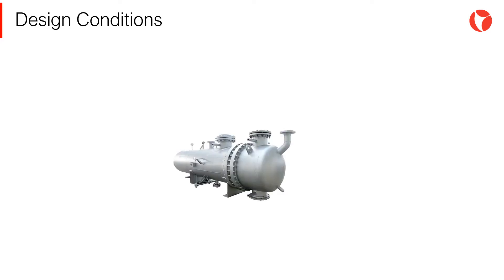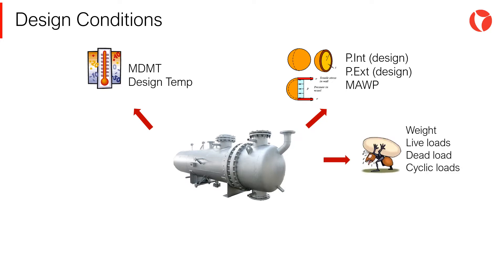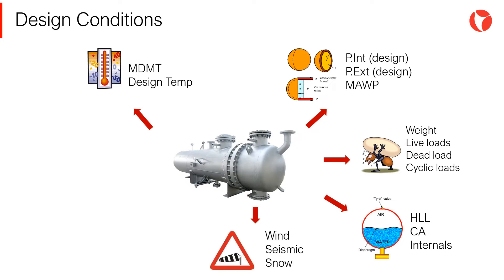Pressure and temperature are just two of the many design constraints that should be taken into account. Some of them are: Temperature — Ambient Temperature, MDMT, Design Temperature; Pressure — Operating, Design, MAWP, Test Pressure; Loading — Dead loads, Live loads, Cyclic Loading; Corrosion Allowance or Liquid Level; Wind and Seismic Conditions; Steam Out; Hydrostatic Test Requirements; and Transportation and Lifting Conditions. Material selection and pressure vessel design depend on these design conditions.